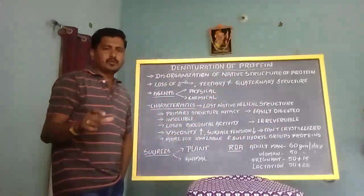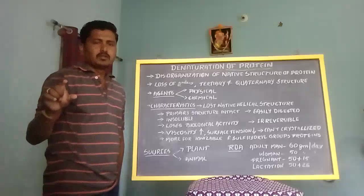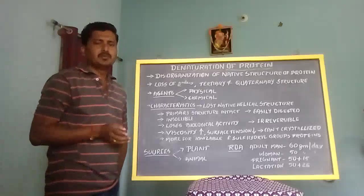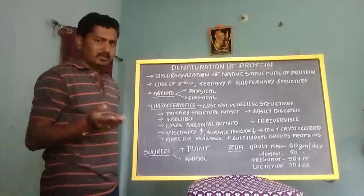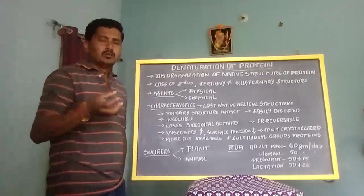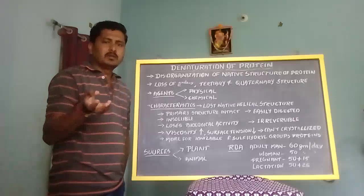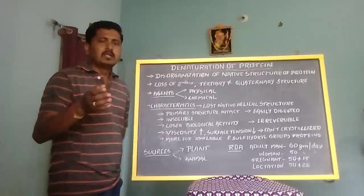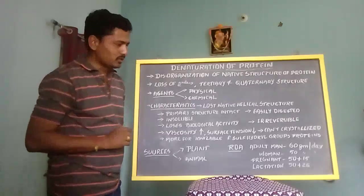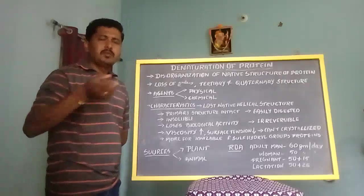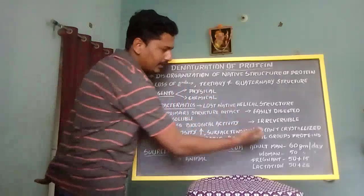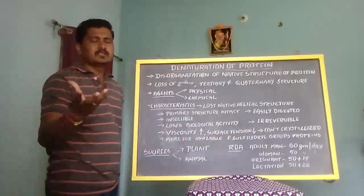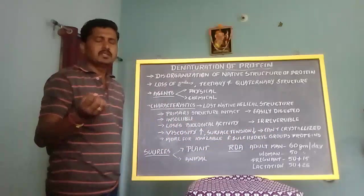The denaturation process is irreversible — it cannot come back to its original position. For example, when you prepare an omelette from an egg, you cannot turn that omelette back into the original egg. That is why it is an irreversible process. Also, denatured proteins cannot be crystallized — we cannot make them into a crystalline form.